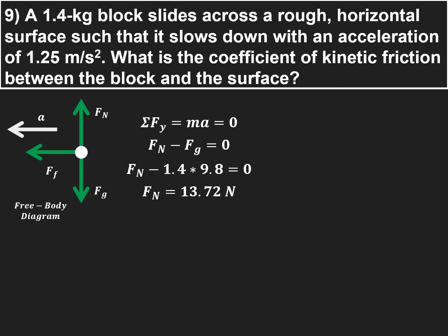Again, since there's no acceleration in the vertical direction, those two forces have to be balancing each other. And the net force in the x direction is going to be equal to mass times acceleration. The only force in the x direction is the force of friction, and it's in the negative direction. So negative force of friction is going to be equal to mass times acceleration.